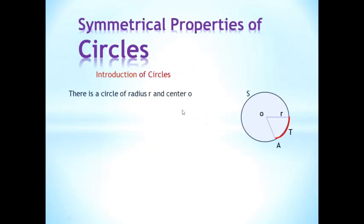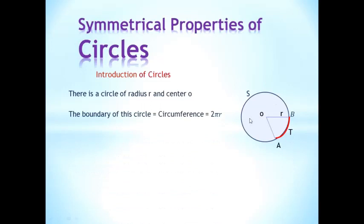This one is a circle of radius r. This is the radius r and center O. You can see the boundary of this circle. The whole boundary of this circle is called the circumference, and that is equal to 2πr. This is the formula.